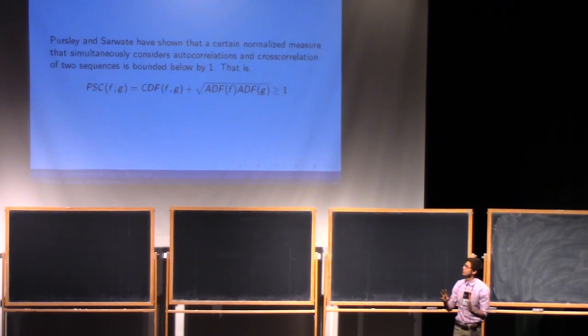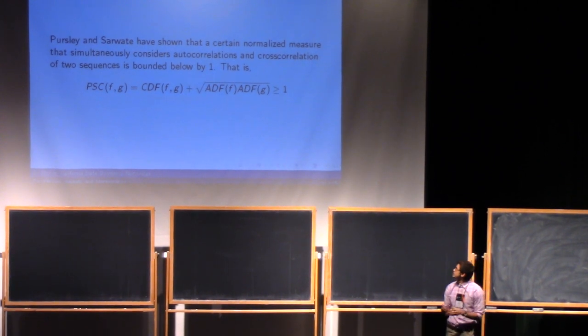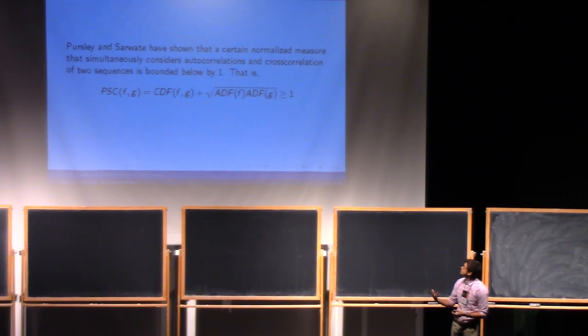But wouldn't it be great if we could get both autocorrelation and cross-correlation low at the same time? Well, these guys, Priestly and Sarwate, showed that there is a measure that basically considers autocorrelation and cross-correlation at the same time, some normalized measure of it, and it's bounded below by one. So, we want to try to hit that bound.